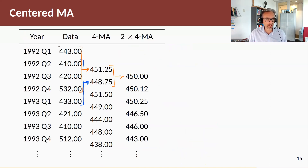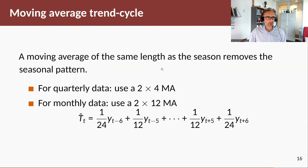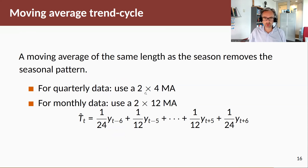Implementing this on quarterly data: our first four-order moving average would be this orange average, then we take the second blue average, and then we average those two so that our resulting 2×4 MA is centered around Q3. A moving average of the same length as a season removes the seasonal pattern. Hence for quarterly data we use a 2×4 moving average, and for monthly data we use a 2×12 moving average.